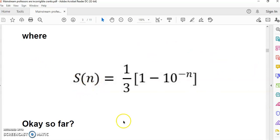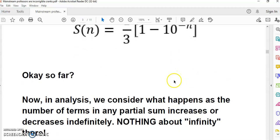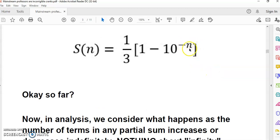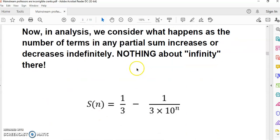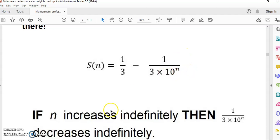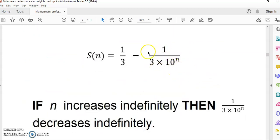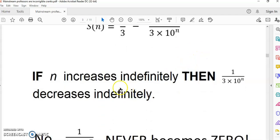In analysis we consider what happens as the number of terms in any partial sum increases or decreases indefinitely, but there's nothing about infinity there. We try to figure out what happens as n becomes very big or n becomes very small. In this case, we're more concerned what happens as n becomes very big. We could rewrite this expression as you see over here. Obviously, just looking at this, if n becomes very big, what happens to this fraction? It starts to become very small, in other words decreases indefinitely.